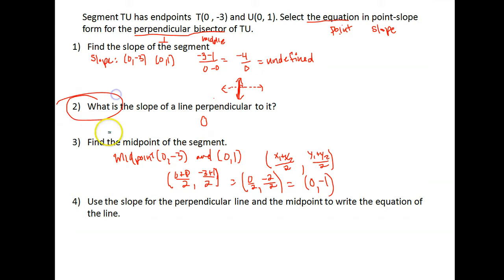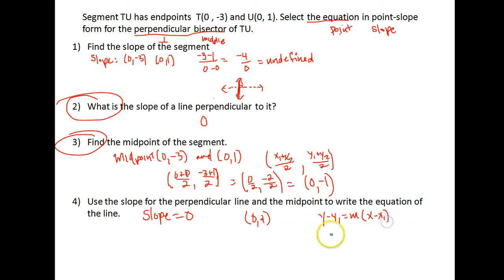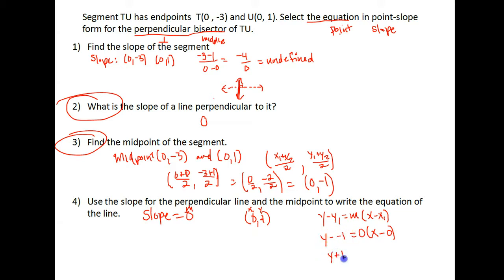Now we write the equation for our line using the slope of the perpendicular line and the midpoint. Our slope is 0, and the point our line goes through is (0, -1). Using point-slope form — y minus y1 equals m times x minus x1 — we get y minus negative 1 equals 0 times x minus 0. Simplifying: minus a negative becomes plus, and 0 times anything is 0, so we get y plus 1 equals 0.